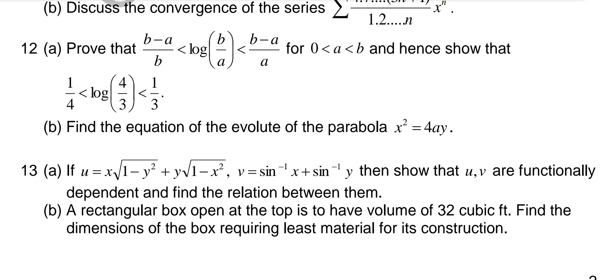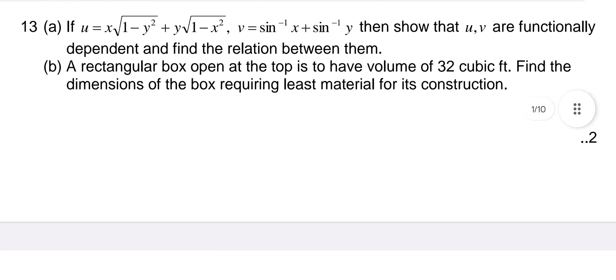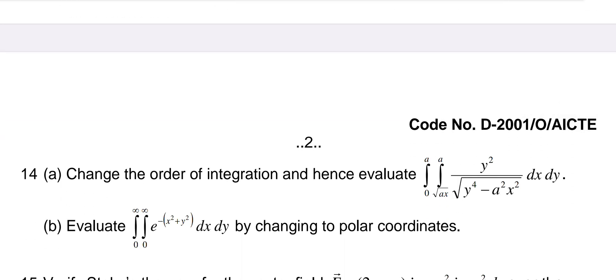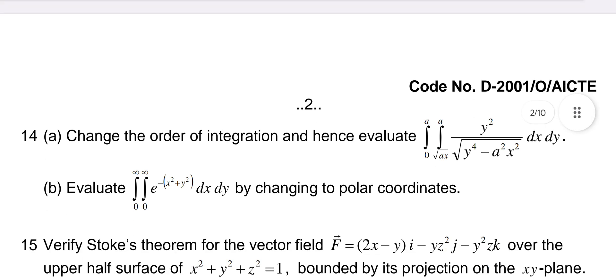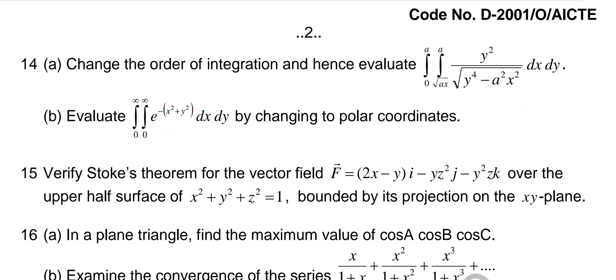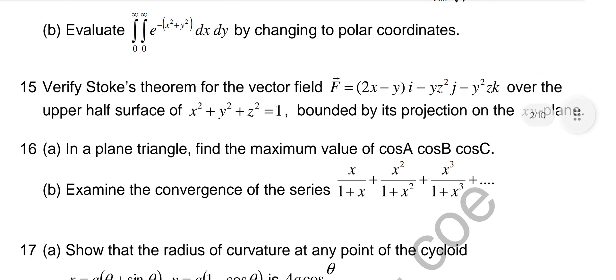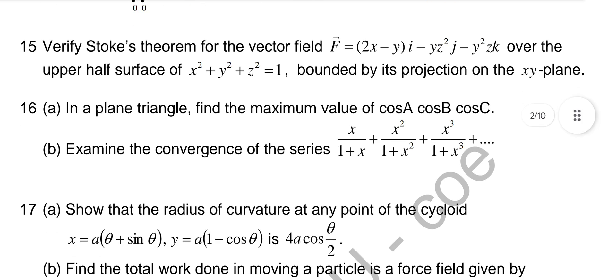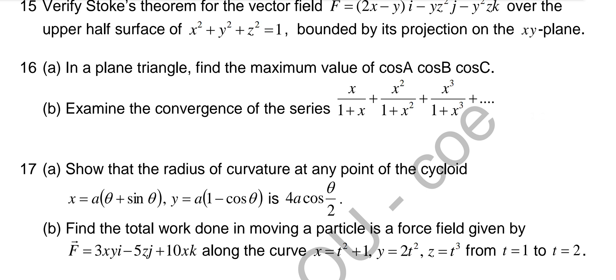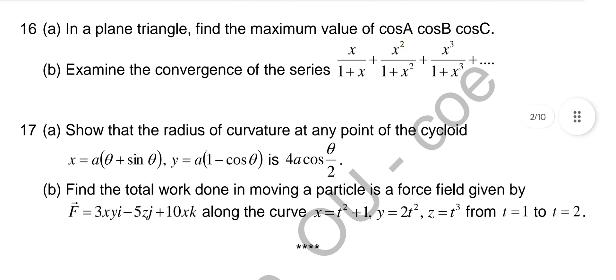He also gave a question on functionally dependent variables using the Jacobian method. Then maxima and minima. Question 14 is on multiple integrals — change of order of integration appeared for two marks and also for five marks. Then changing into polar coordinates, converting x and y in terms of r and θ. Question 15 asks to verify Stokes' theorem — in vector calculus we have three big theorems: Gauss's, Green's, and Stokes' theorem, given for 10 marks. Then again maxima and minima, convergence, radius of curvature, and total work done in vector calculus.